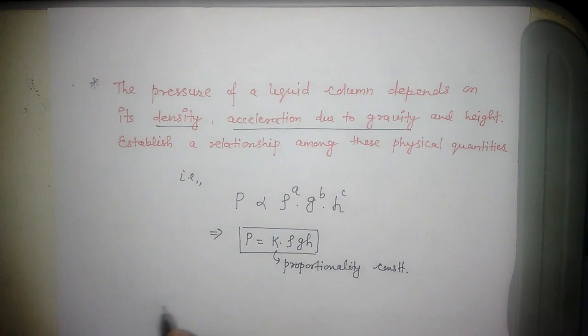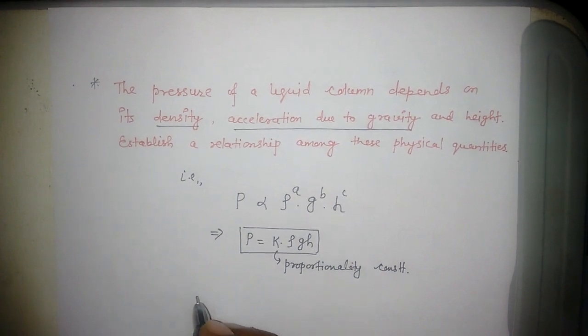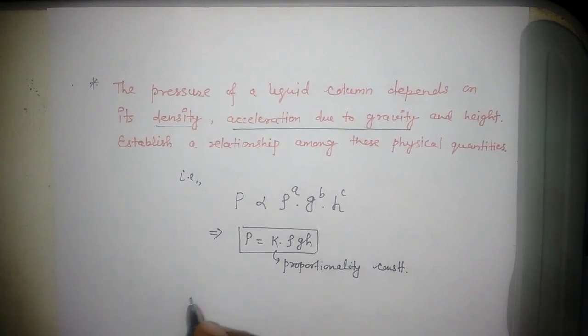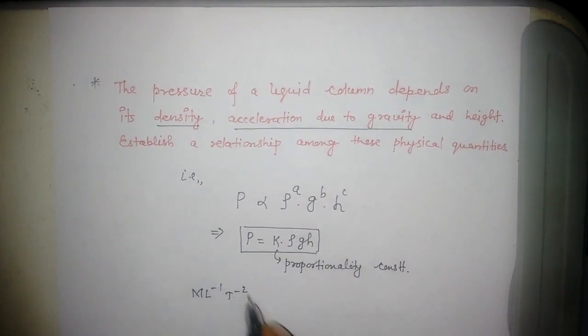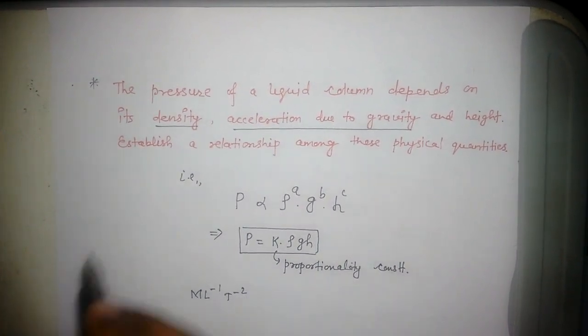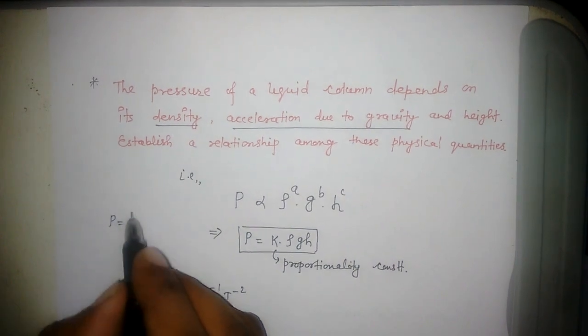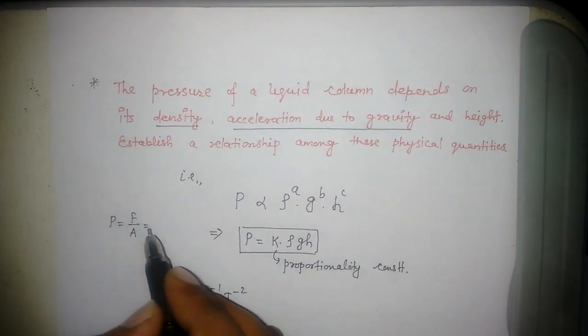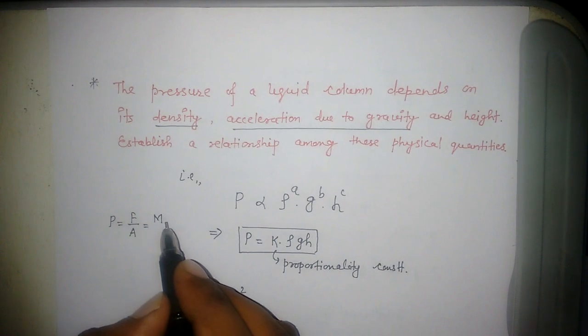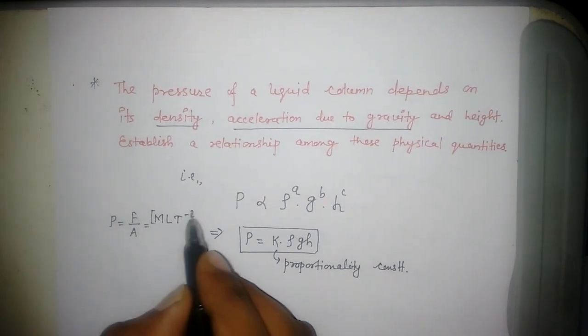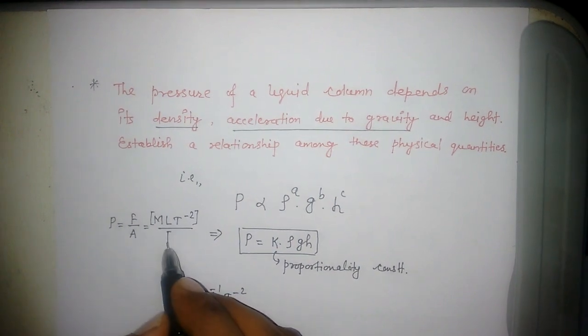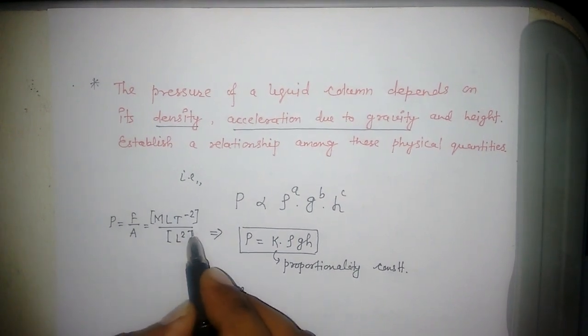Pressure's dimension is force upon area. Force equals mass into acceleration, which is M L T^-2. Dividing by area, which has dimension L^2, pressure has dimension M L^-1 T^-2.